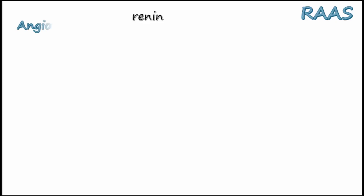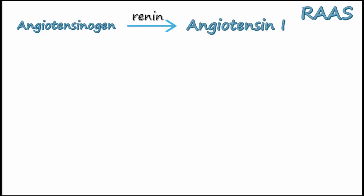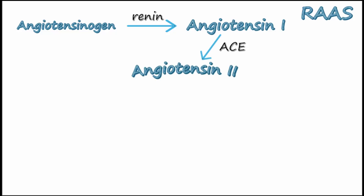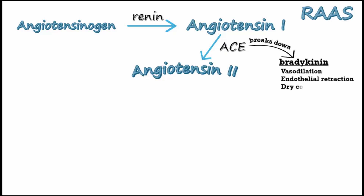After the enzyme renin is released from the kidney, it enters the blood and cleaves angiotensinogen, made by the liver, to yield angiotensin 1. The enzyme angiotensin-converting enzyme, abbreviated ACE, located in the capillaries of the lungs and other capillaries, converts angiotensin 1 to angiotensin 2. ACE also breaks down a peptide called bradykinin that causes vasodilation, endothelial retraction, and a dry cough.